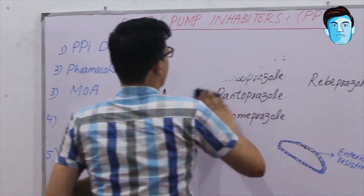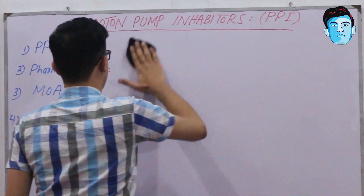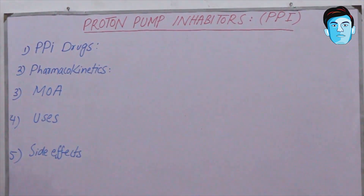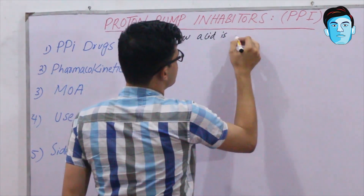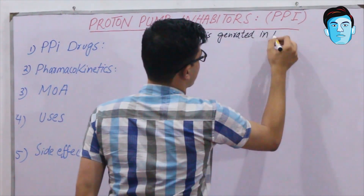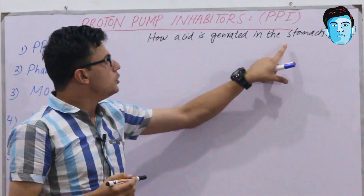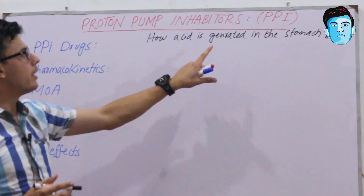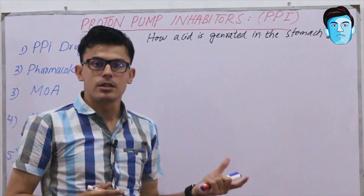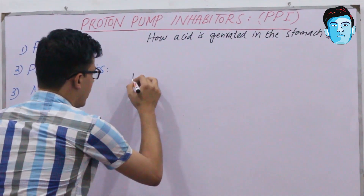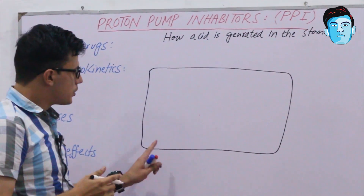Now let's talk about the mechanism of action of PPI. Being a medical student, you need a sound knowledge of how PPI works. Before discussing PPI action, we must understand how acid is generated in the stomach. Assume this is a parietal cell — the specialized cell of the stomach. This is the lumen of the stomach, this is the parietal cell, and this is the inner surface.